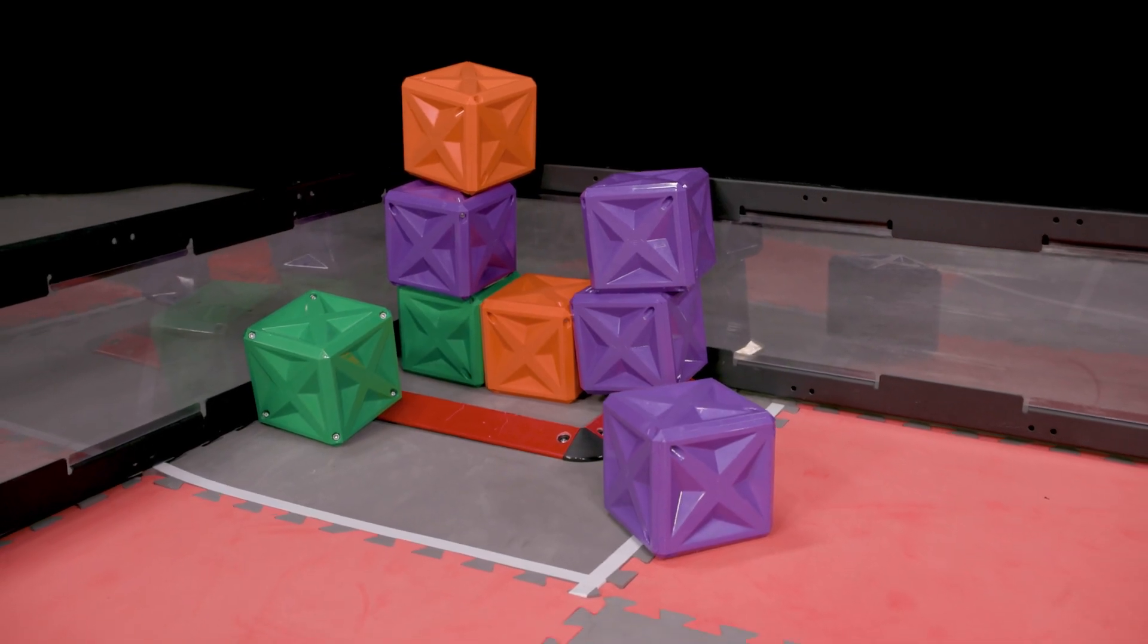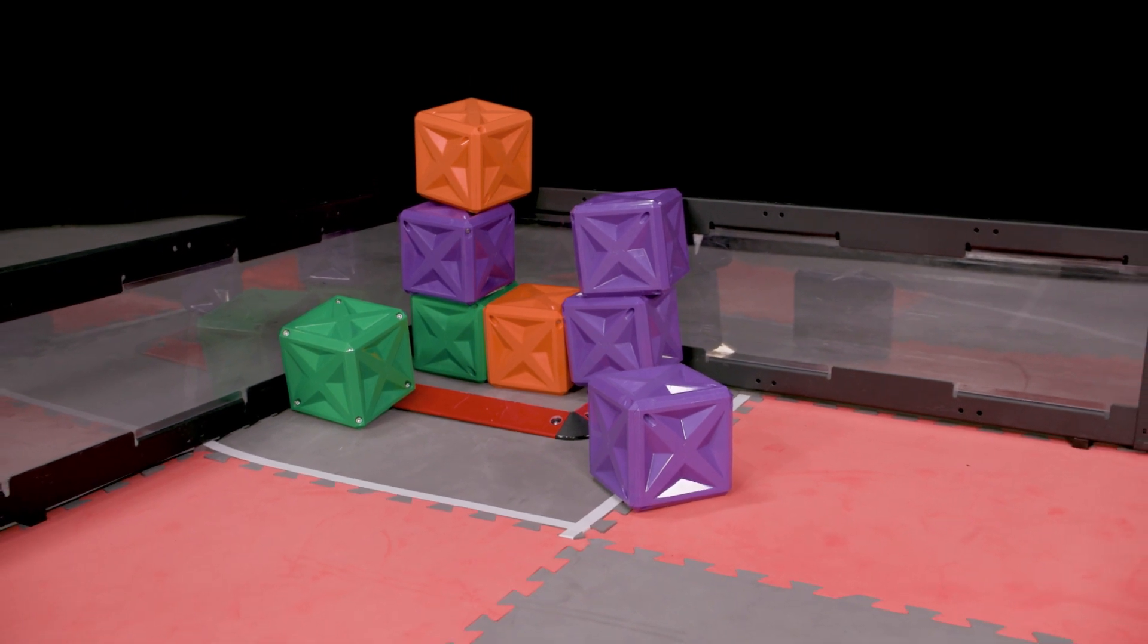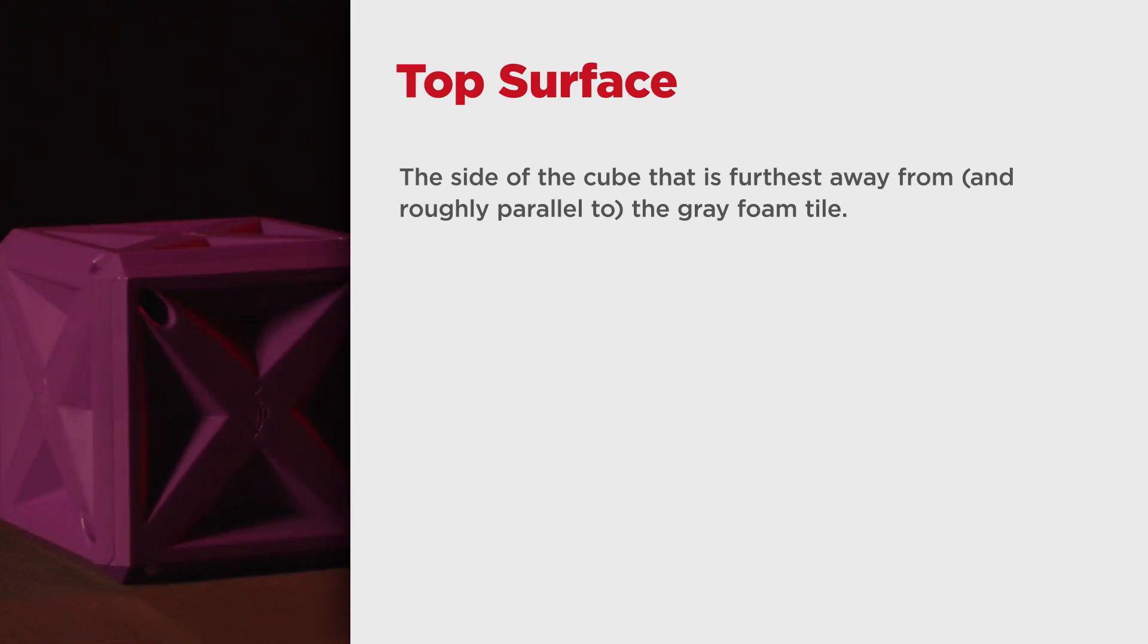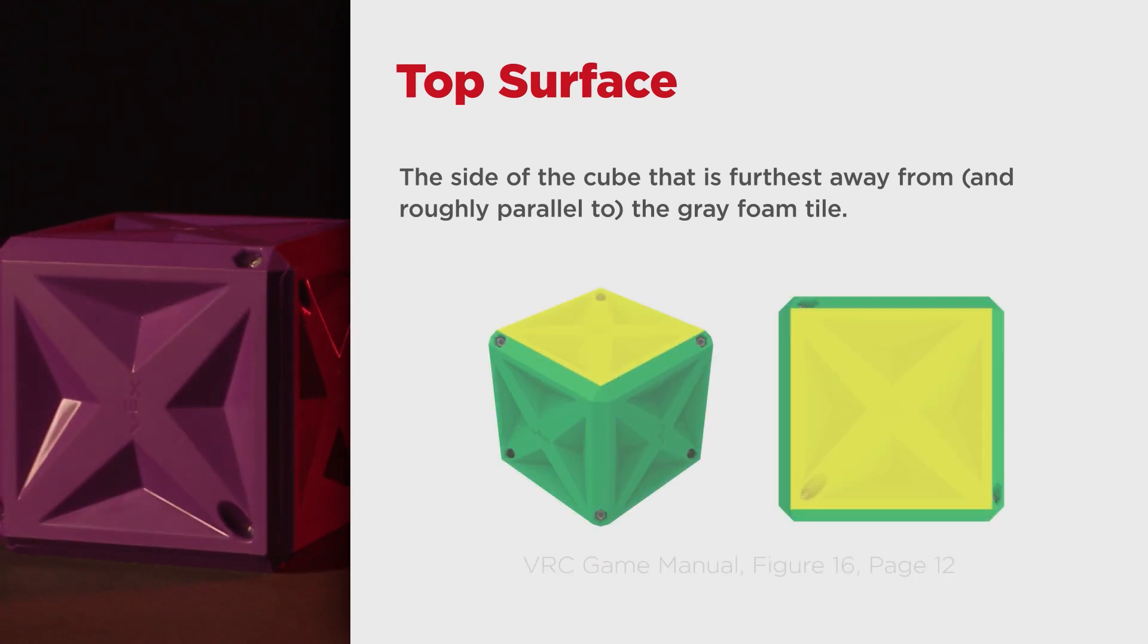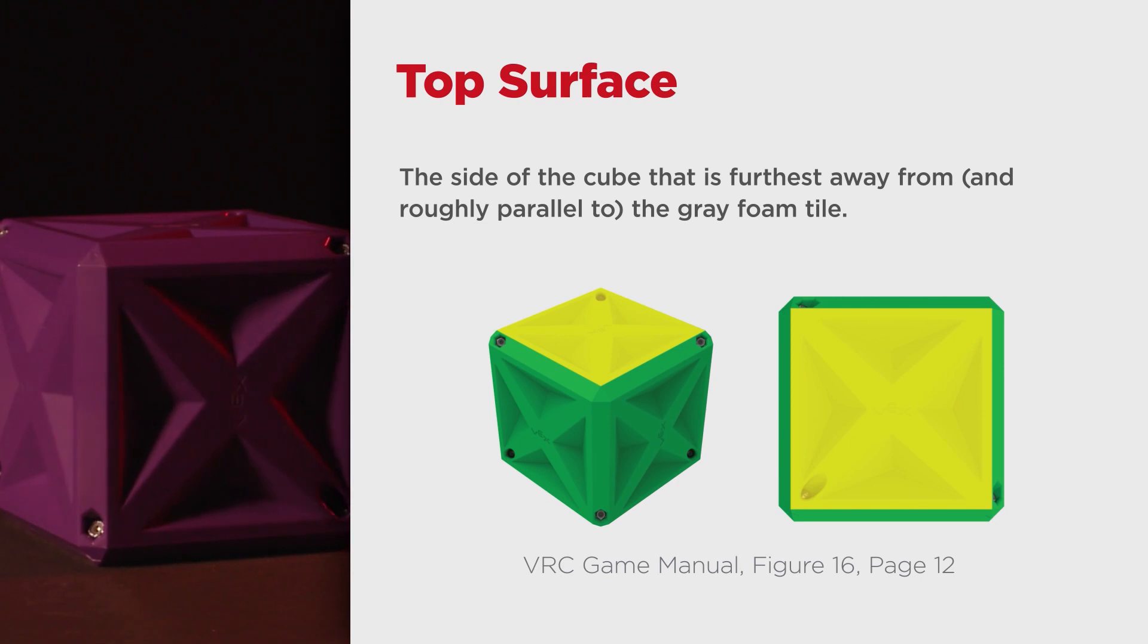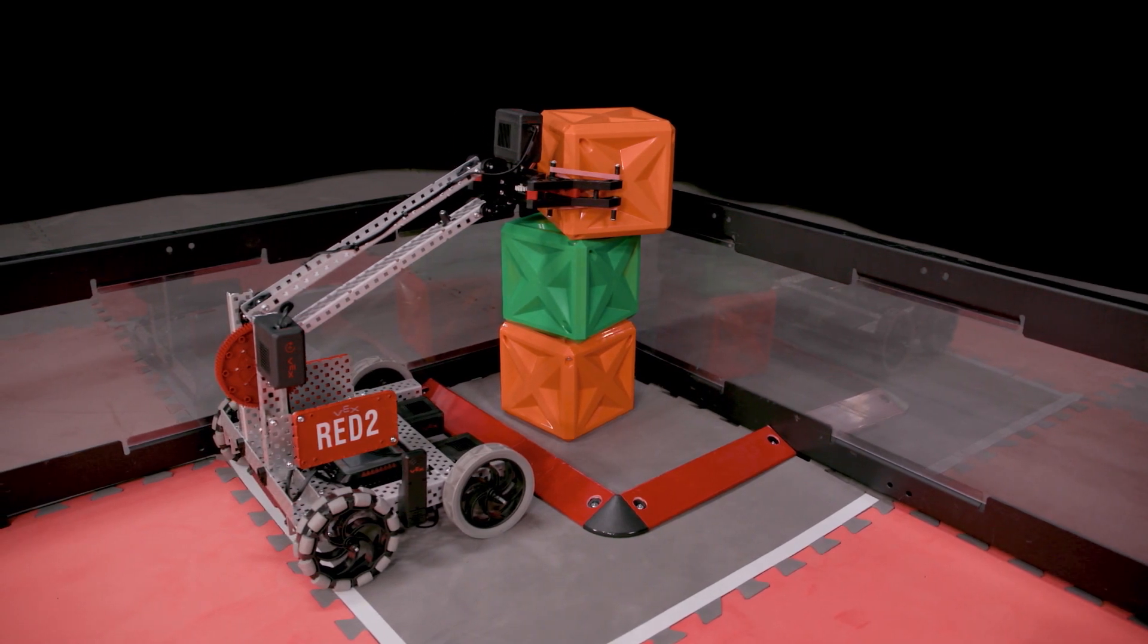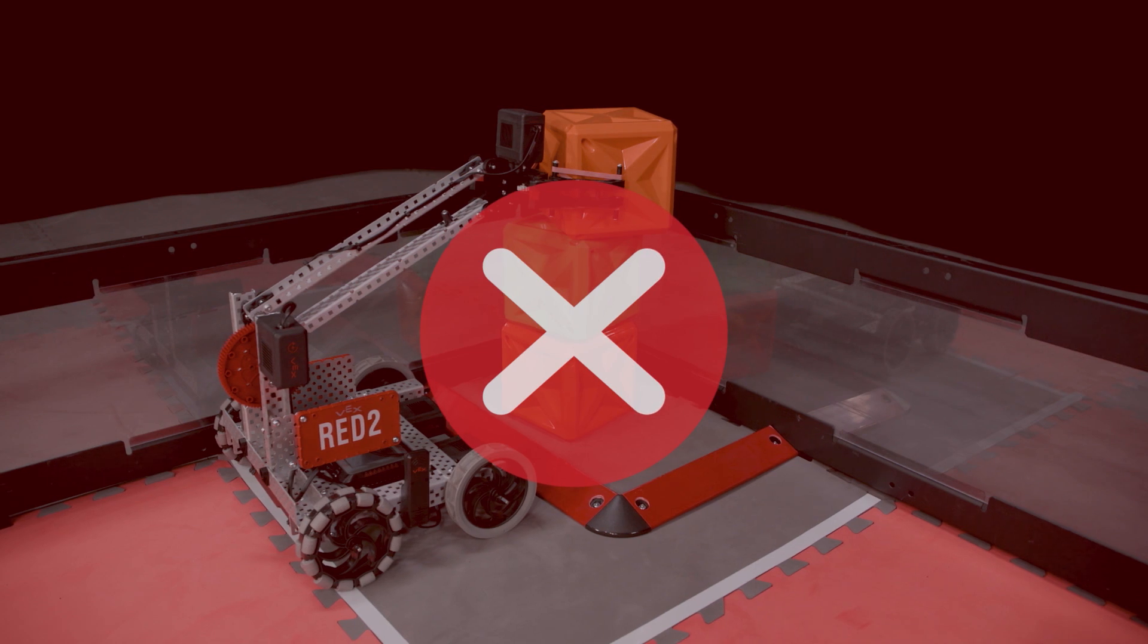To be considered as a stacked cube, a cube must be contacting the top surface of a base cube or another stacked cube. The top surface is defined as the side of the cube which is furthest away from and roughly parallel to the gray foam tile. The inner indents on that cube's side are considered part of its top surface, but the chamfered edges are not. So, if any part of a cube is contacting the top of the field perimeter wall or the top surface of another cube that is not scored, then it will not count.